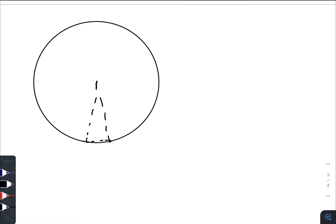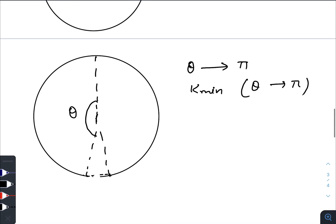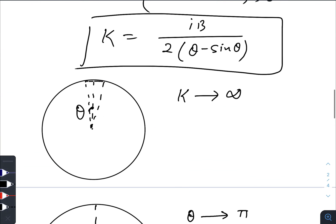This is the final situation of the wire. I hope you can understand that the value of theta has extended to π. So if k is very small the value of theta will extend to π, so the minimum value of k we will get when theta tends to π.